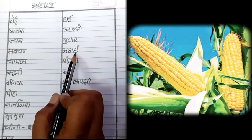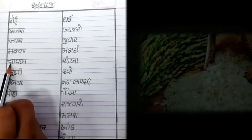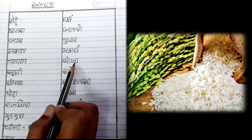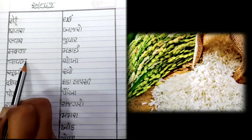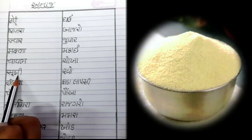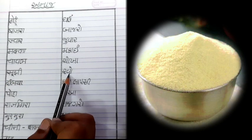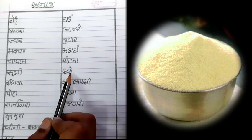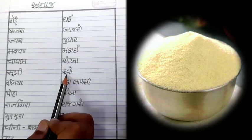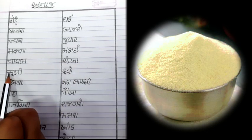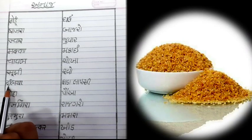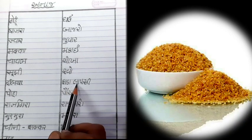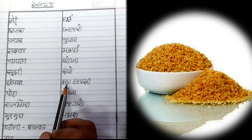ત્યાર પછી 'ચાવલ' એટલે કે 'ચોખા'. ચોખામાંથી પણ ઘણી બધી વાનગી - ખીચડી, ભાત વગેરે - તમે બનાવીને ખાતા જ હશો. ત્યાર પછી છે 'સૂજી' - 'સૂજી' એટલે કે 'રવો'. 'રવો' એટલે એક દાણાદાર લોટ, જે ઘઉં અથવા ચોખામાંથી બને છે. તમે મહાપ્રસાદ 'સીરો' તો ખાધો હશો.